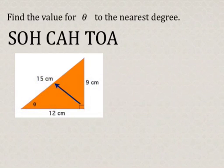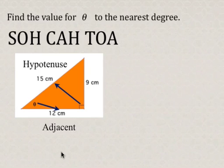The hypotenuse is the side opposite the right angle, so it's 15 centimeters, and the side adjacent to angle theta is the 12 centimeter side. So now we're going to use cosine,